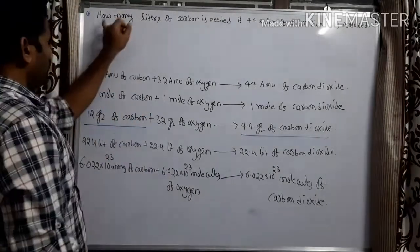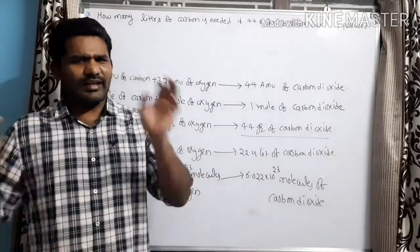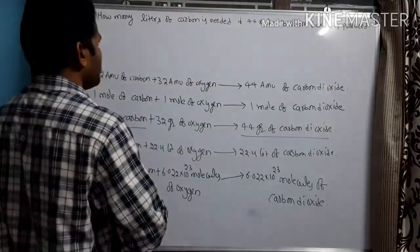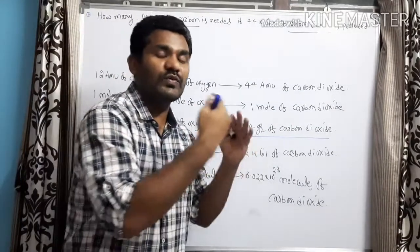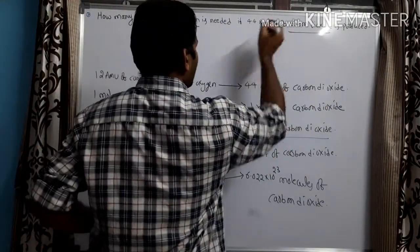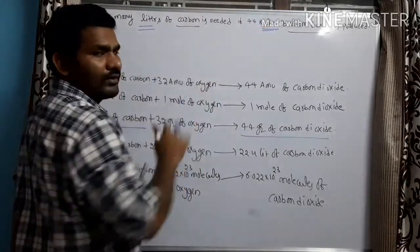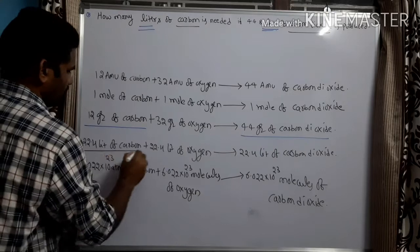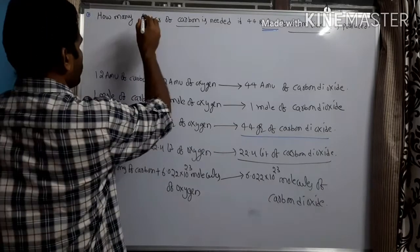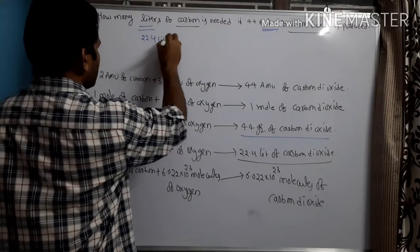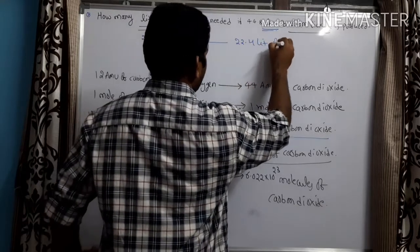Now see the second example: how many liters of carbon is needed if 44.8 liters of carbon dioxide is produced? The relation is again between carbon and carbon dioxide, but now the quantities are expressed in liters. From the equation, the relation is: 22.4 liters of carbon gives 22.4 liters of carbon dioxide.